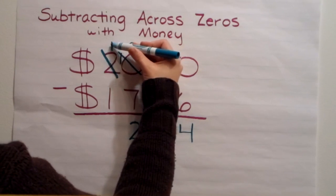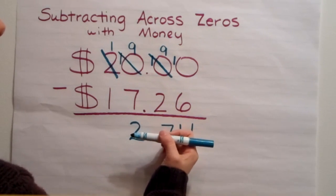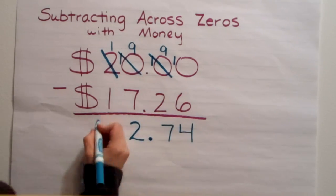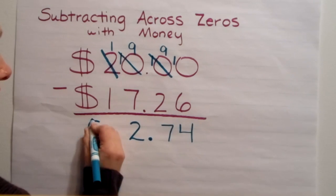And then I'm left with one take away one in the tens place, which is zero. So I'm not going to write anything there. And then I am going to bring my dollar sign down.